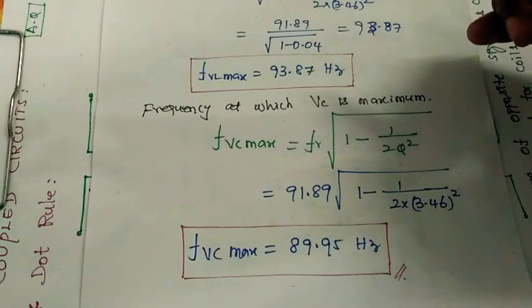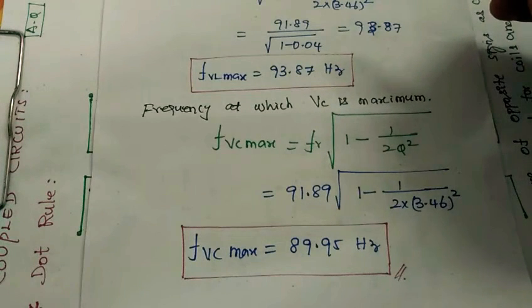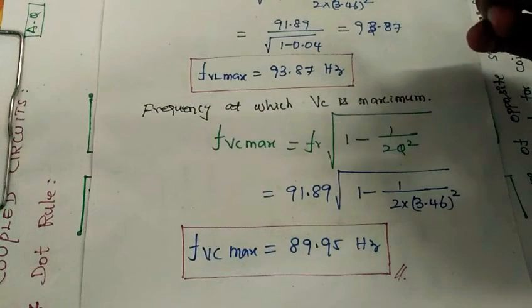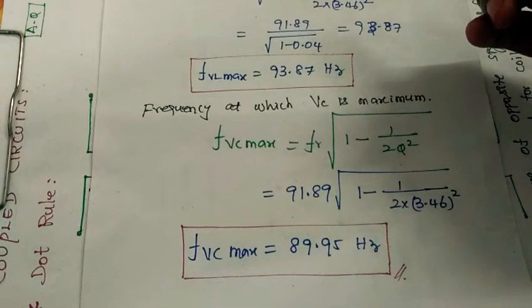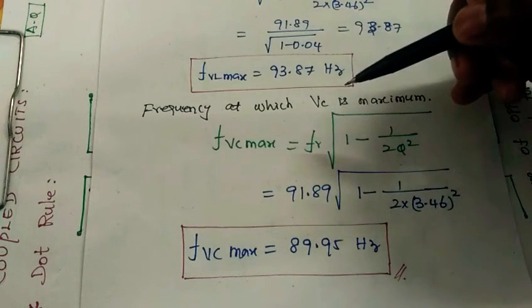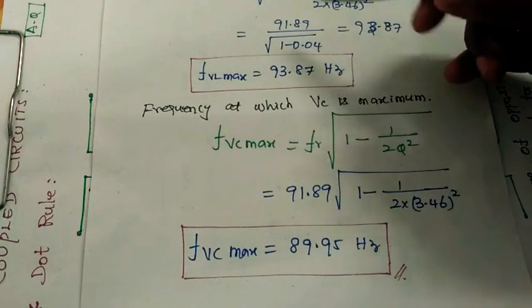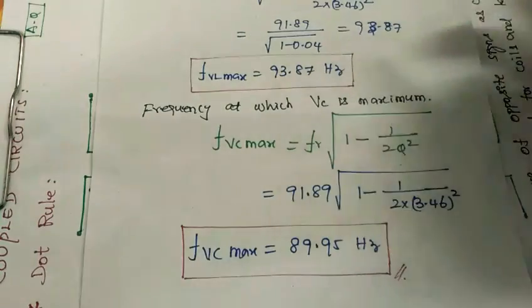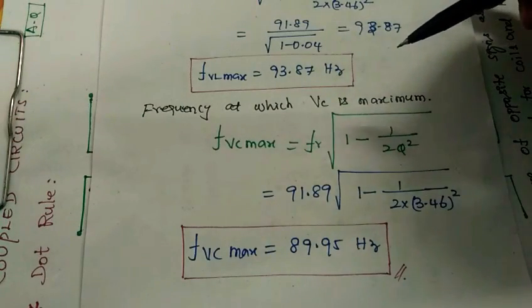So we have calculated all the answers: resonance frequency value, half-power frequency, bandwidth, Q-factor, impedance at resonance, voltage across inductance and capacitance, and the frequency at which VL and VC are maximum. This is all we calculated. Thank you.